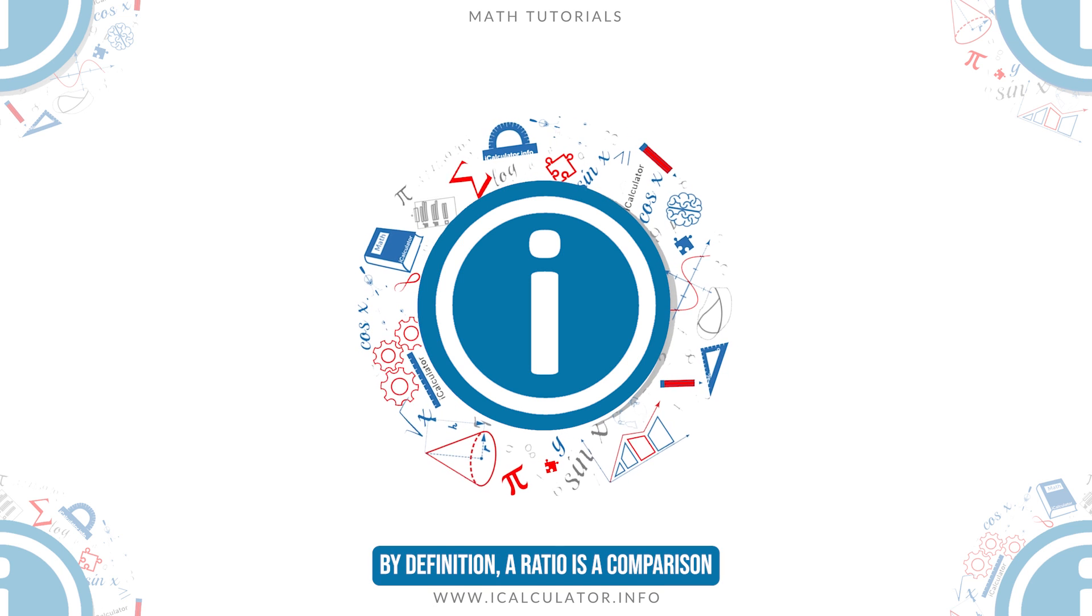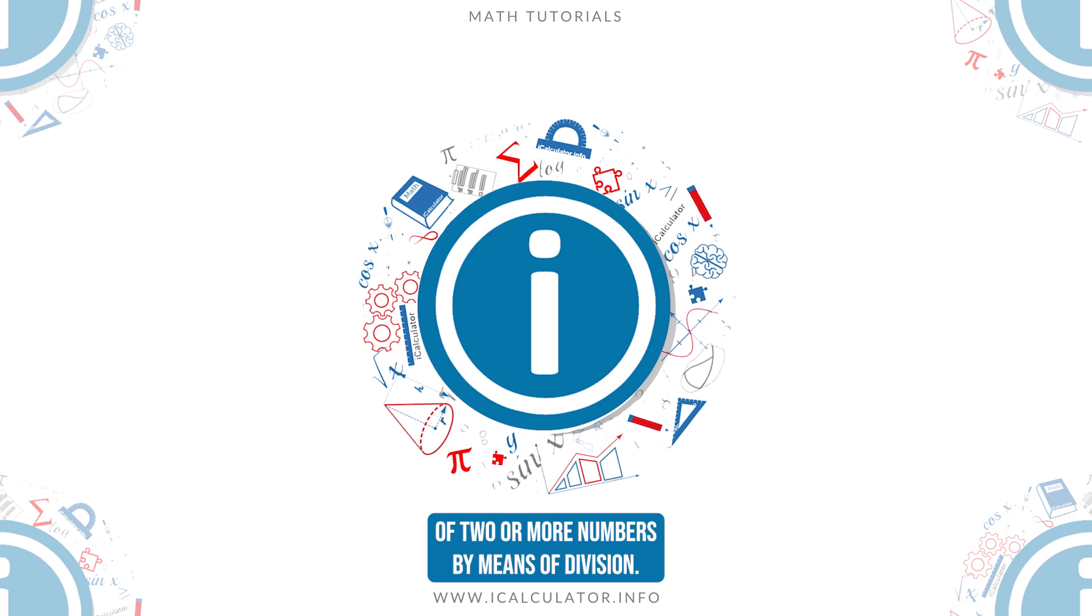By definition, a ratio is a comparison of two or more numbers by means of division.